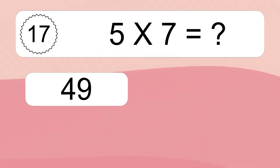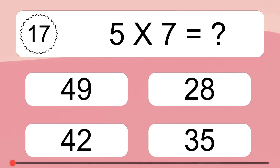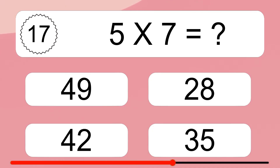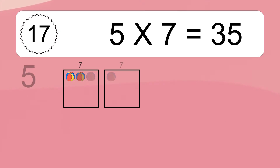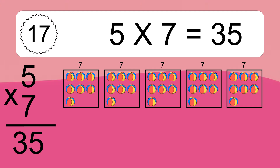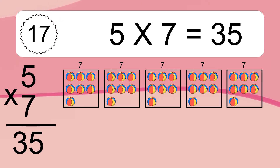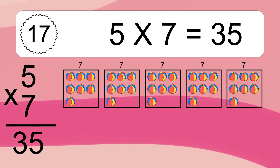5 times 7 equals what? 5 times 7 equals 35. We have 5 boxes, and each box has 7 colorful balls inside. If you count all the balls in all the boxes together, you will have 5 times 7 balls. This equals 35 balls.